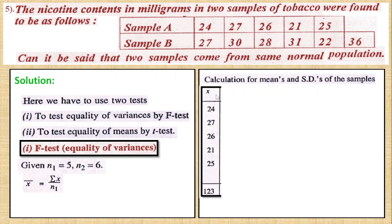First, sample A is x. Adding up all the values gives us 123. So, x-bar is equal to summation x by n1. So 123 divided by n1 value 5 equals 24.6.